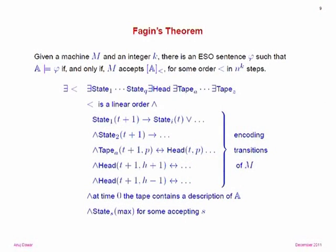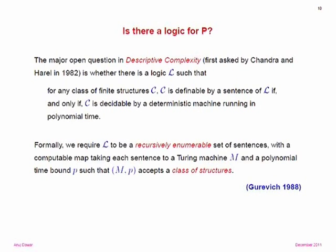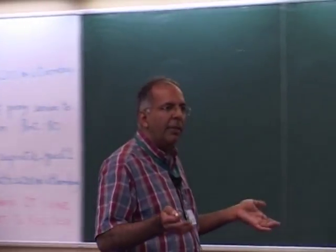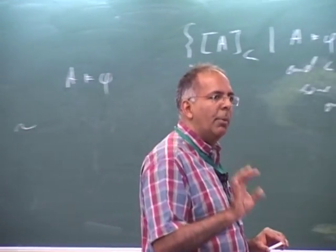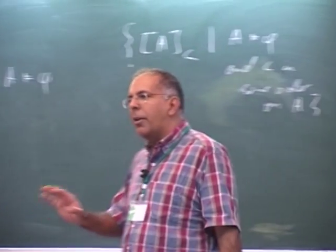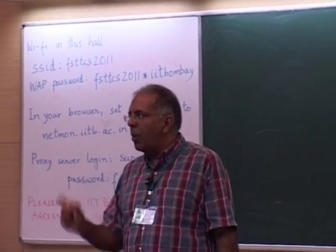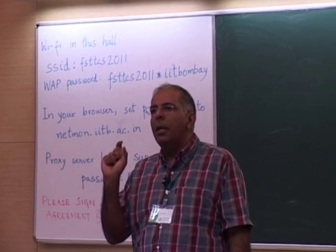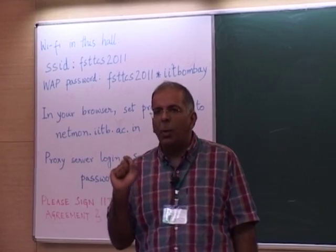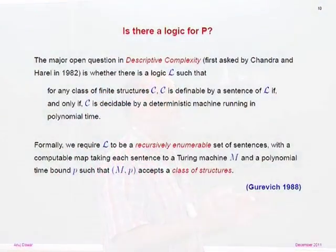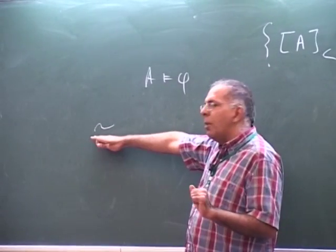Fagin's theorem leads naturally to a question first posed by Chandra and Harel in 1982, which has for nearly 30 years been the main open question in descriptive complexity: whether we can give a similar characterization for polynomial time. Ramanujam gave characterizations in terms of second-order horn logic and least fixed-point logic, but specifically on ordered structures. The question is whether it is possible to characterize polynomial time without restricting to ordered structures.